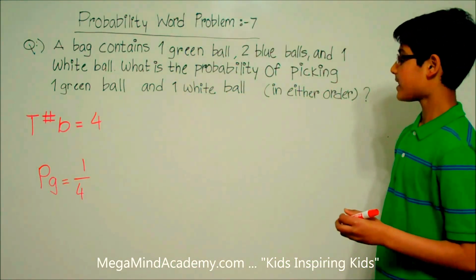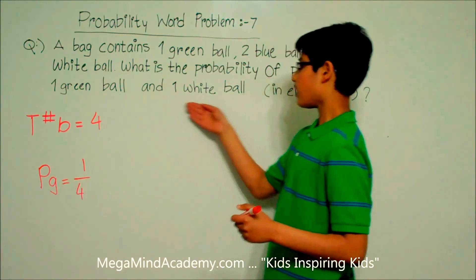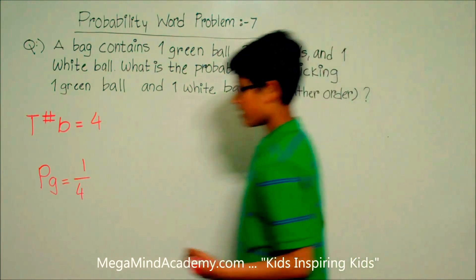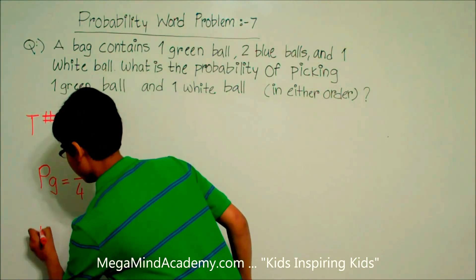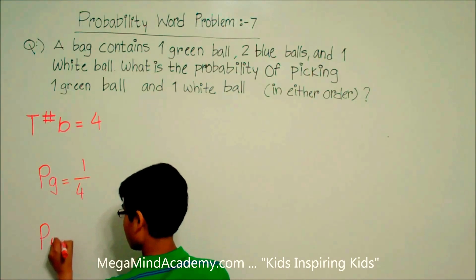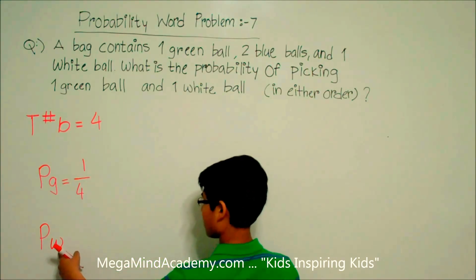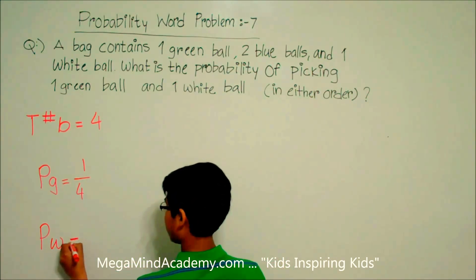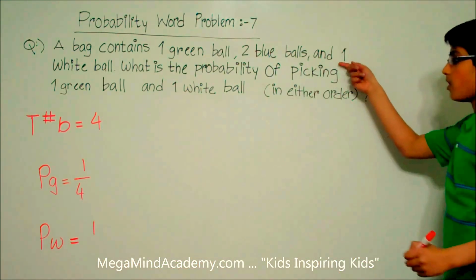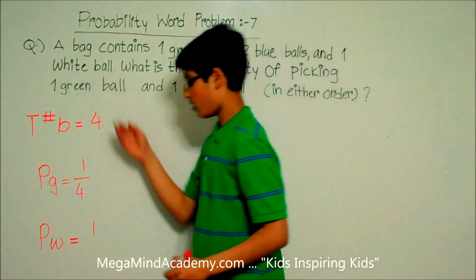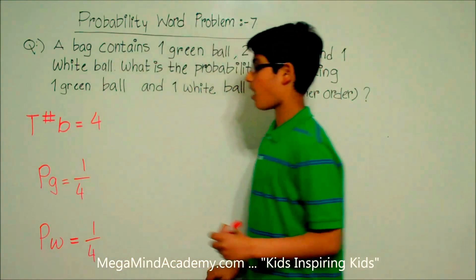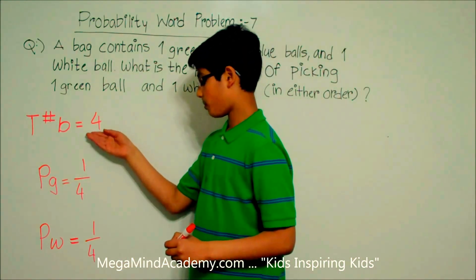It says you can pick the green ball and the white ball in either order. So the probability of picking the white ball — P(W) — is equal to one fourth, because there is one white ball out of four total balls.